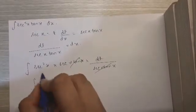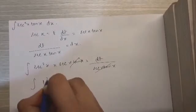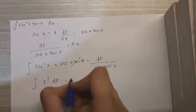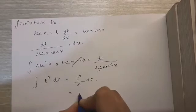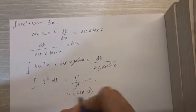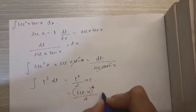And we are left with the sec x becomes t. So t cube dt, which we know is t raised to 4 upon 4 plus c. So the final answer is sec x raised to 4 upon 4 plus c.